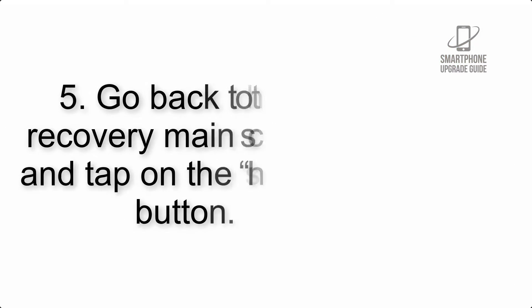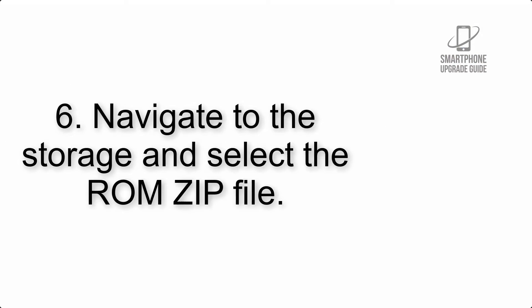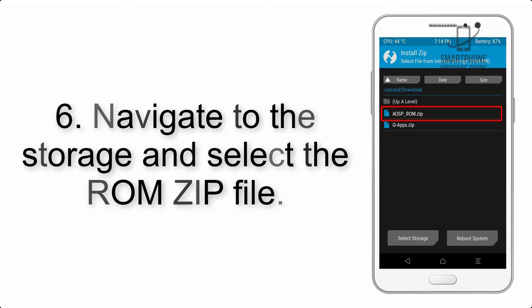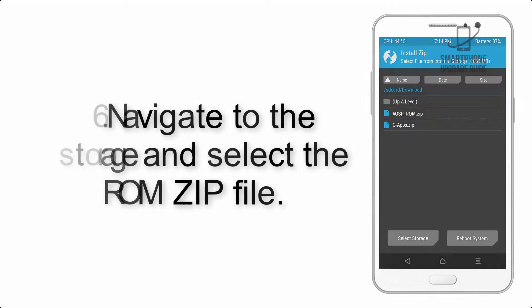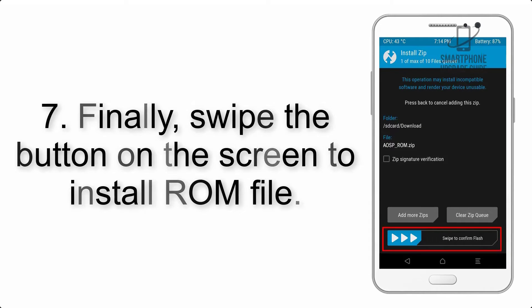Step 4: Swipe the button to wipe the device. Step 5: Go back to the recovery main screen and tap on the Install button. Step 6: Navigate to the storage and select the ROM zip file.